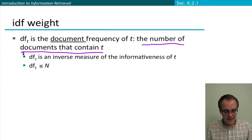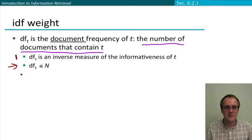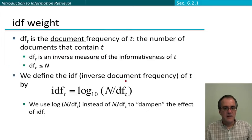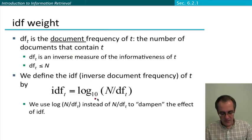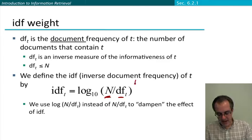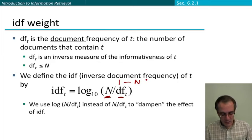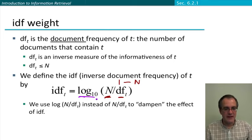So document frequency is an inverse measure of informativeness of the term. And we also note that the document frequency of a term has to be smaller than the number of documents in the collection. So putting that together, this gives us the measure of inverse document frequency, where we start with the document frequency and use it as the denominator. And the numerator N here is the number of documents. So it's some value between one and N. And so then what we do after that is we take the log of it. And the log is used to dampen the effect of inverse document frequency.